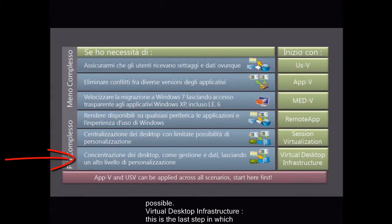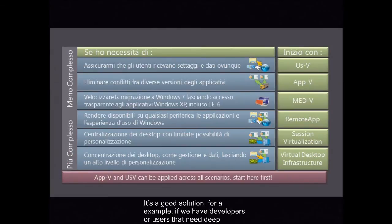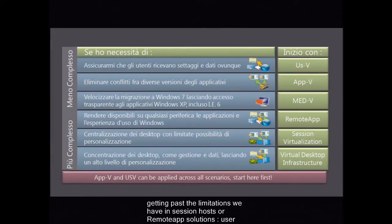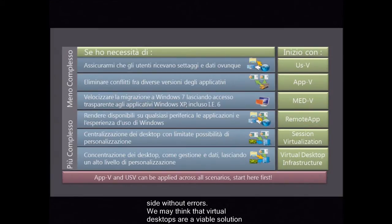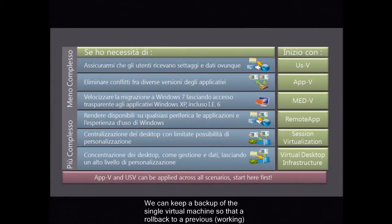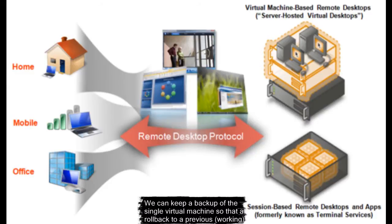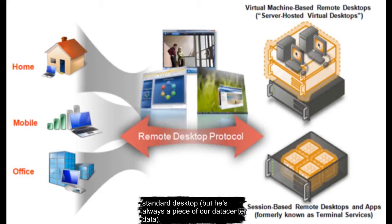Virtual desktop infrastructure is the last step in which we are deploying a whole virtualized desktop, not just a group of applications. It's a good solution if we have developers or users that need deep customizations of their working environment. This is useful in getting past the limitations we have in session hosts or remote app solutions. User environment is always limited by parameters needed to enable users to work side-by-side without errors. We may think that virtual desktops are a viable solution for smart users, while remote app is a working answer to the standard user's needs. We can keep a backup of the single virtual machine so that a rollback to a previous working state is always available, and the user feeling is the same as working on a standard desktop, but the machine is always part of our data center.